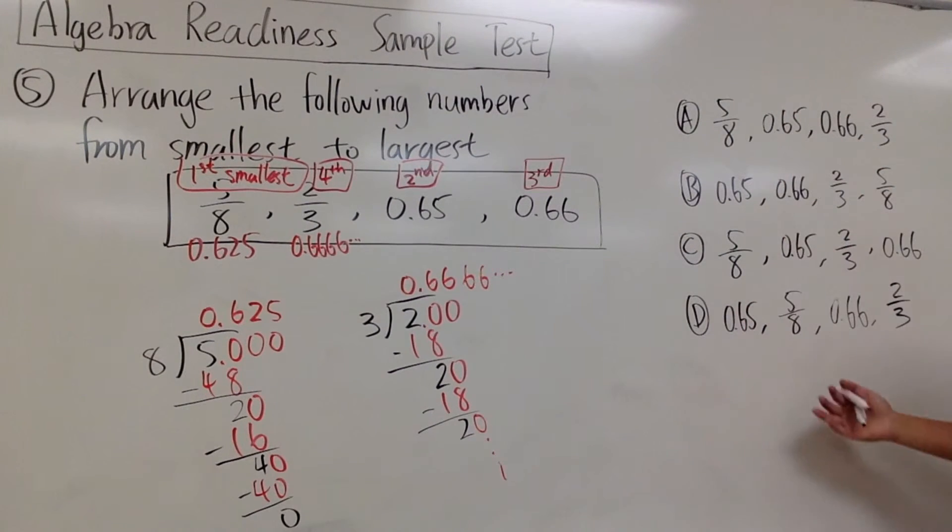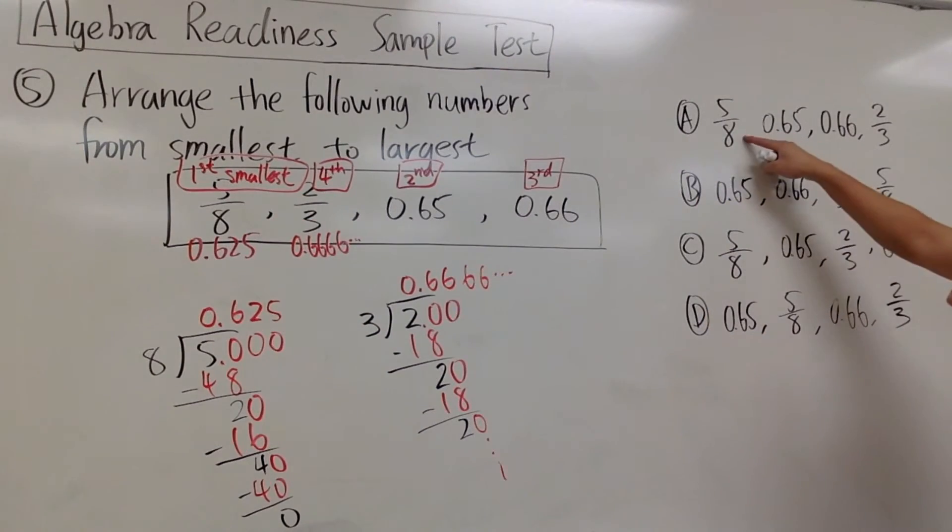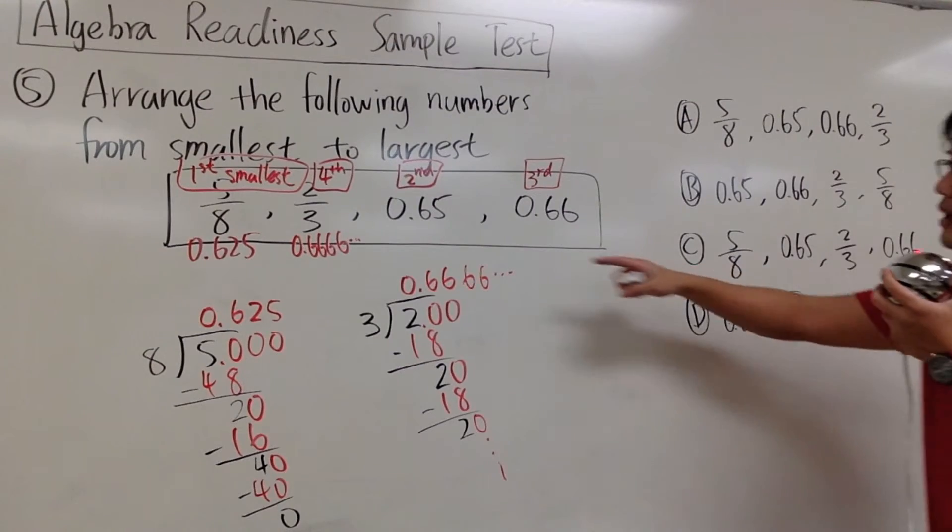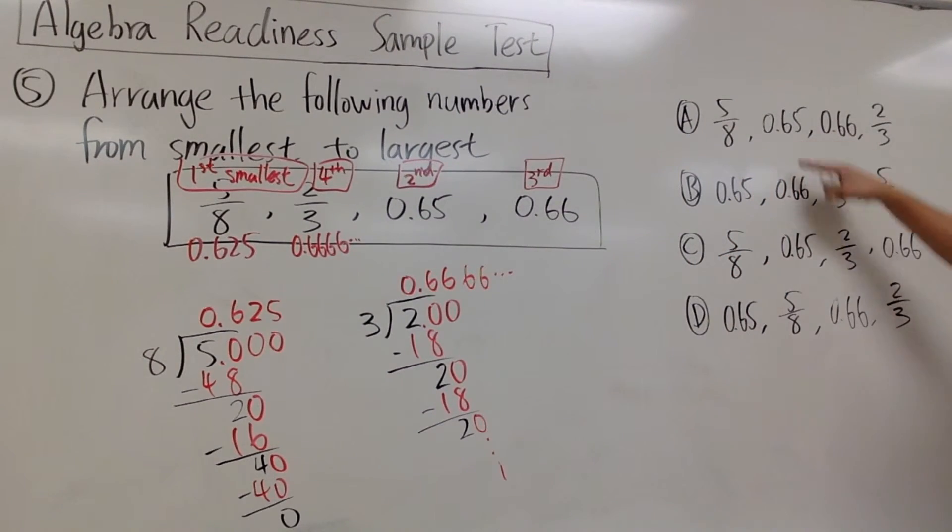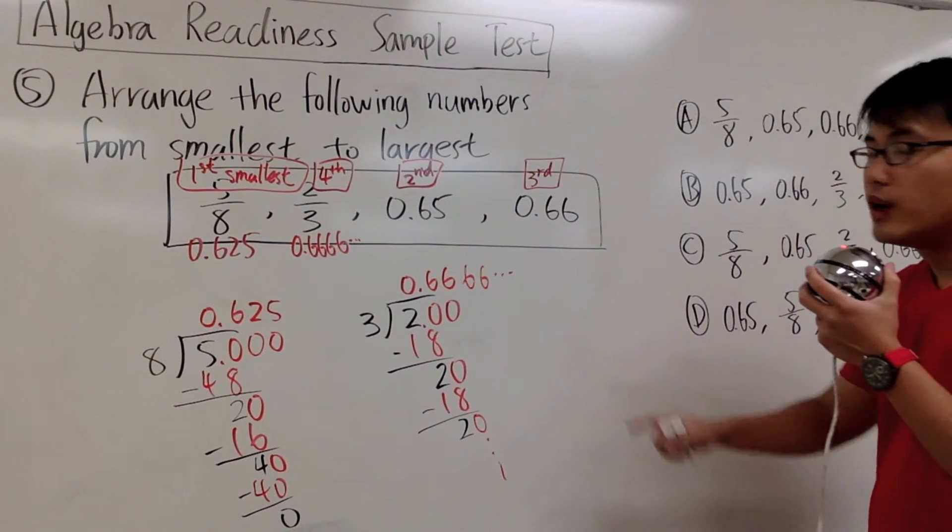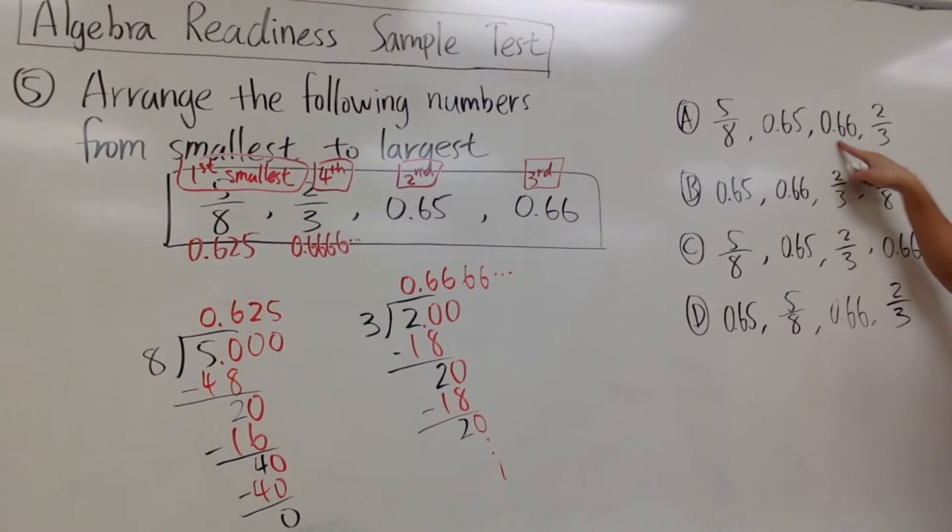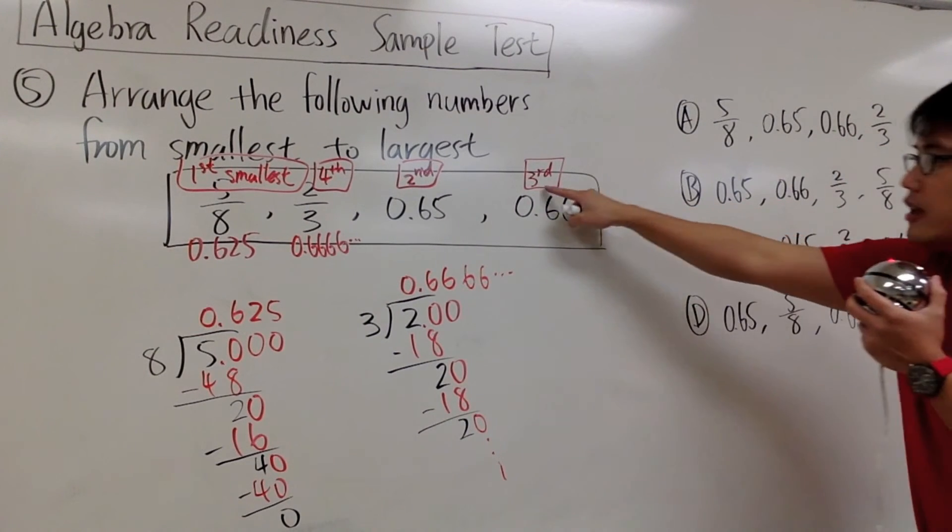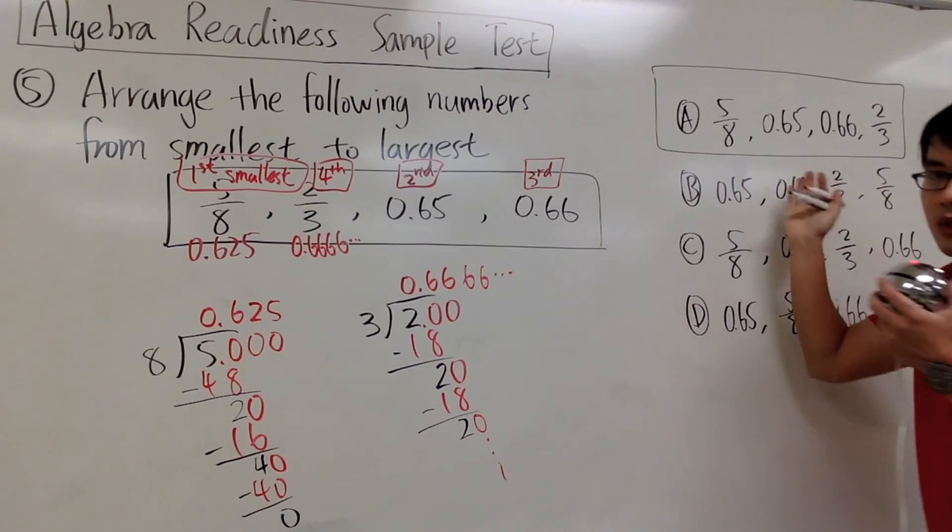Anyways, here are the answer choices. Which one is the correct answer? We want to have the 5 over 8 goes first. So it's either A or C. And now we want the 0.65 goes second. So we see that we have both of them have 0.65. But then for the third one, we need to have 0.66. That's choice A. 0.66 is the third smallest. Therefore, the answer choice A is the correct answer to this question.